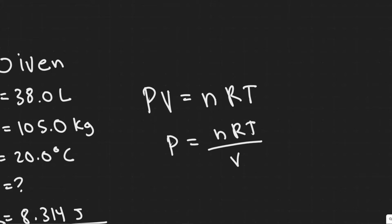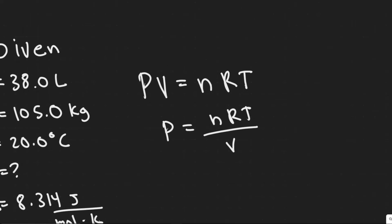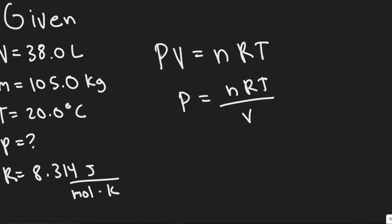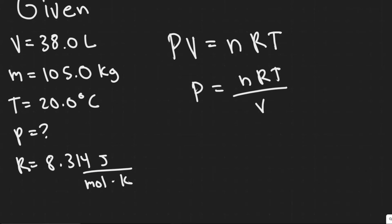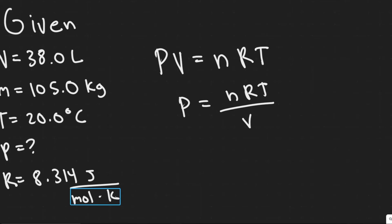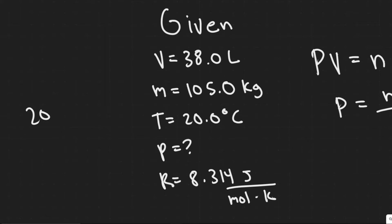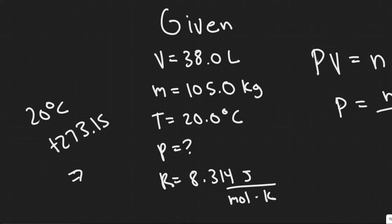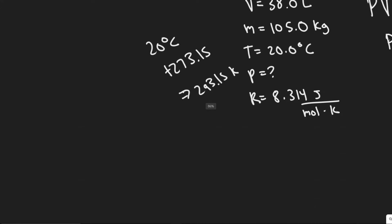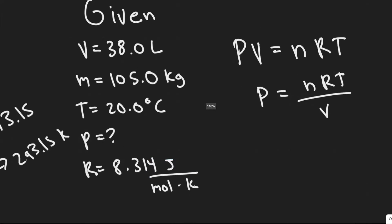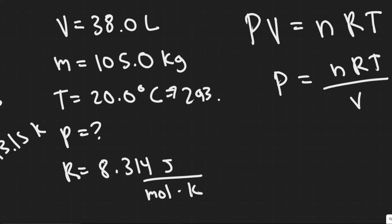This is what we're going to use to solve, but we need to find all of these values. R is 8.314 joules per mole kelvin. Keep in mind that this is not in Celsius, so we need to make sure our temperature is in Kelvin. To convert 20 degrees Celsius into Kelvin, you add 273.15. So 20 plus 273.15 gives you 293.15 Kelvin.